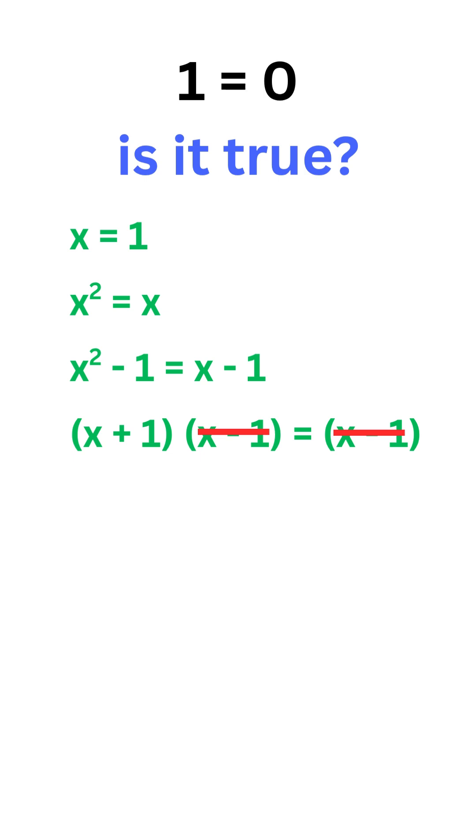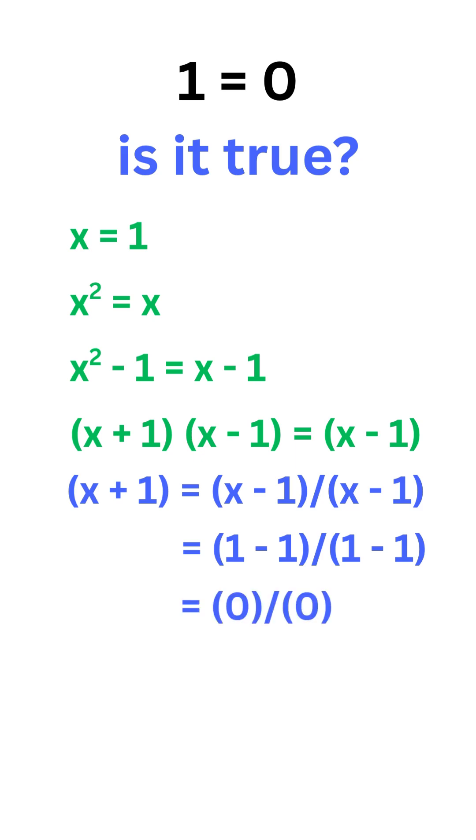it happens only when we divide x minus 1 on the right by x minus 1 from the left. But this is not possible because x is 1. If we substitute x here, we get 1 minus 1 divided by 1 minus 1. That is 0 divided by 0. Dividing any number by 0 results in infinity.